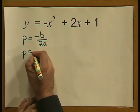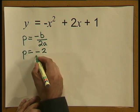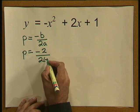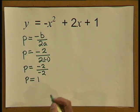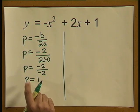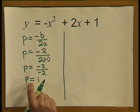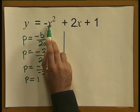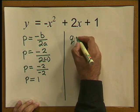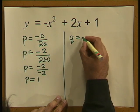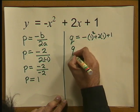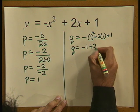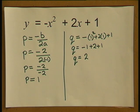For this equation, b is 2, so p is equal to negative 2 divided by 2 times negative 1. That gives p equal to negative 2 over negative 2, so p equals 1. To find the y-coordinate q, we substitute x equals 1 into the equation: q equals negative 1 squared plus 2 times 1 plus 1, which gives negative 1 plus 2 plus 1, so q equals 2. The turning point of this parabola has coordinates (1, 2).